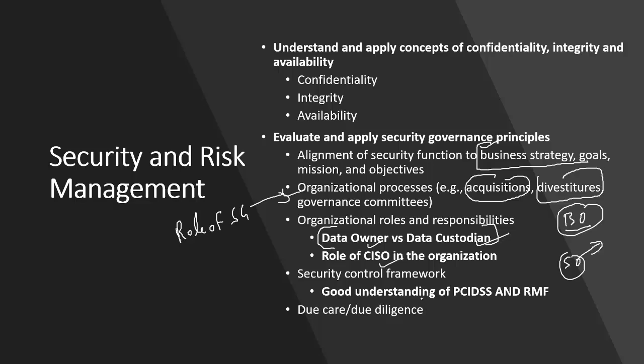To build a security governance framework, you can reference industry benchmarks like NIST, COBIT, and COSO. The exam will not test security governance frameworks in detail, but you need a good understanding of PCI DSS and its 12 controls. PCI DSS is a standard — not mandatory by law — but all payment card industry services accepting credit cards must comply with it. The ultimate goal of PCI DSS is confidentiality of data.